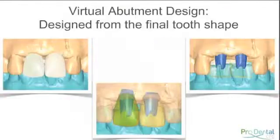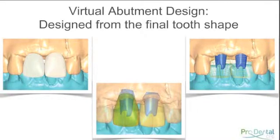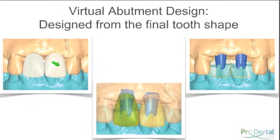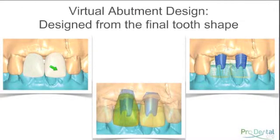Virtual abutment design is probably the most important characteristic of the abutment, and it comes back to the concept of reverse treatment planning. On the left-hand side we have an idealised wax-up of where we want the final tooth position to be, and it's from this wax-up that the abutment is designed.